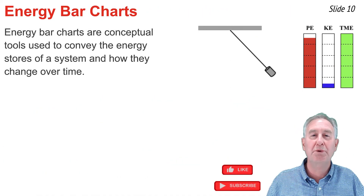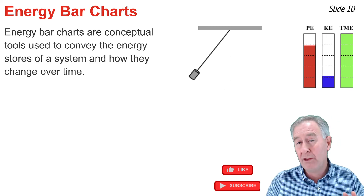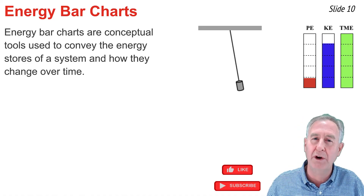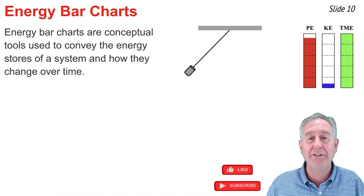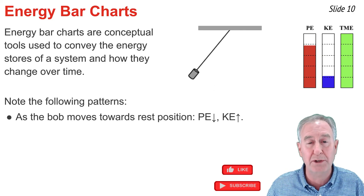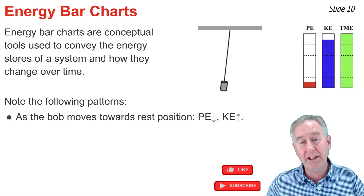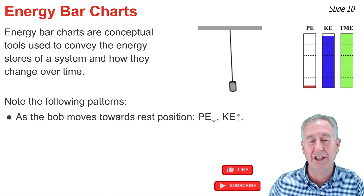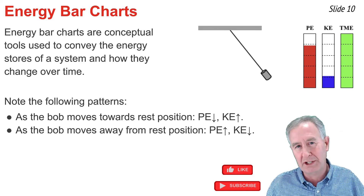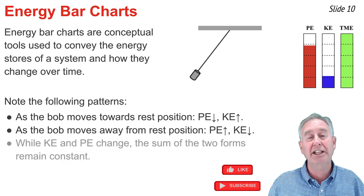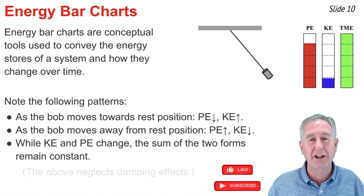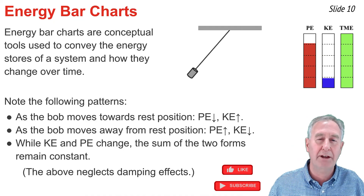An energy bar chart is a conceptual tool that shows what form of energy the object possesses and how those forms change over the course of the object's motion. There's an animation of a pendulum doing the back and forth with corresponding energy bar charts. The key patterns are: as the pendulum bob moves towards the resting position, it gains speed but loses height — PE decreases and KE increases. As it moves away from the resting position, it gains height but loses speed — PE increases and KE decreases. The total mechanical energy — the sum of KE and PE — remains constant throughout the motion. All of this presumes no damping effects from air resistance or other dissipative forces.